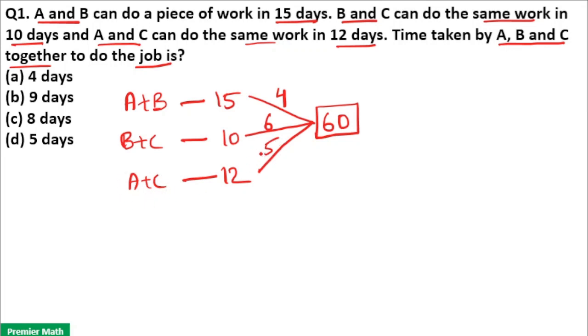Efficiency of A and C is 5 unit. That means A and C can complete 5 unit of work in a day. Here add A, B, B, C, A, C together. There is 2A, 2B and 2C. That means 2 into A plus B plus C.